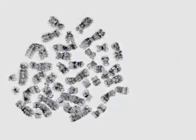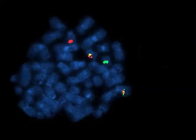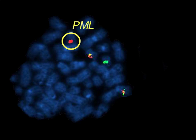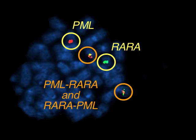These mutations can easily be detected with fluorescence-in-situ hybridization studies, as shown here. The red probe detects PML, and the green probe detects RAR-alpha. The regions where the red and green dots are juxtaposed represent the PML-RAR-alpha and reciprocal RAR-alpha-PML fusion events.